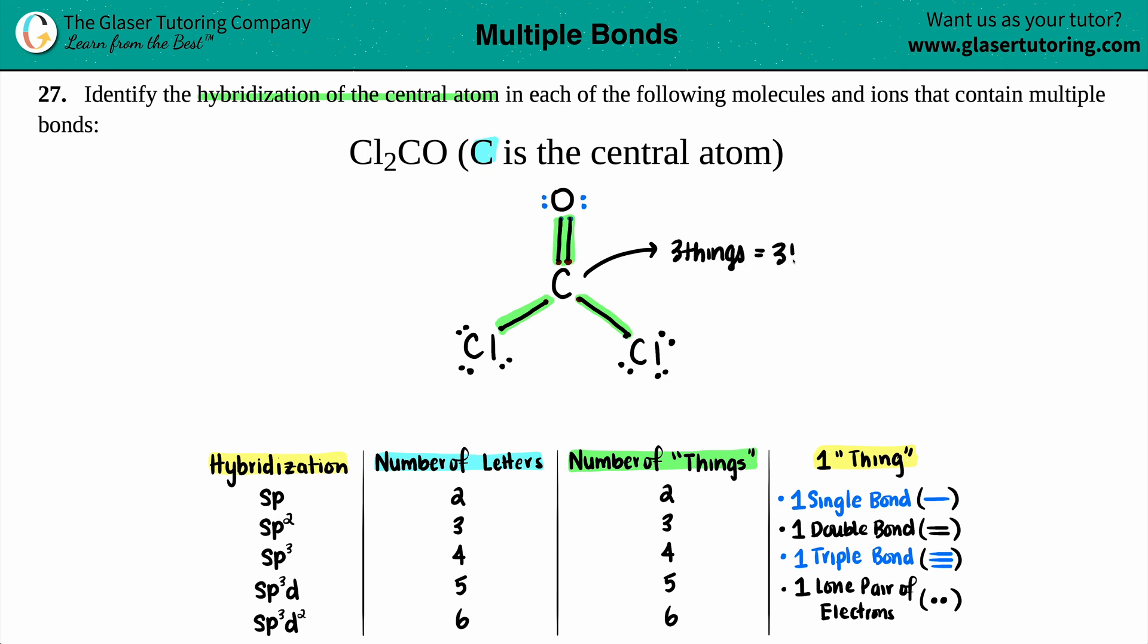And three things, three letters. Three things, three letters. So three, three, SP2. And we'll write that SP2, box it off, and we are good to go. So that is the hybridization for the carbon.